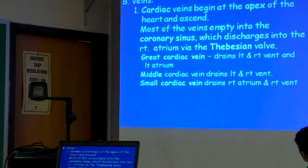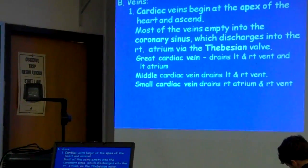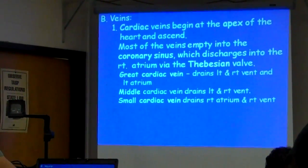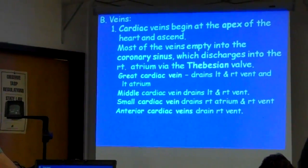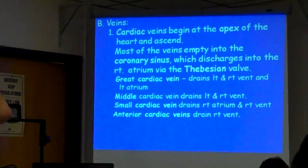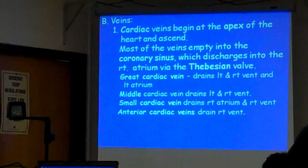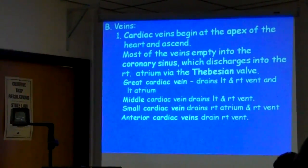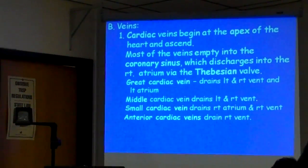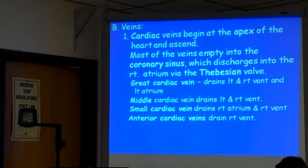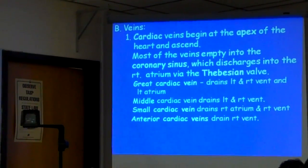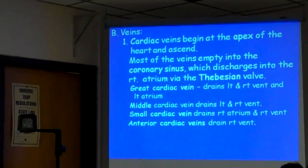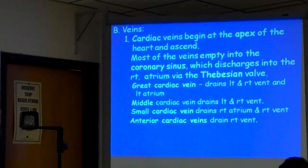The middle cardiac vein drains the left and right ventricle. The small cardiac vein drains the right atrium and right ventricle. The great, middle, and small cardiac veins empty into what's called the coronary sinus. That last one — the anterior — empties directly into the right atrium.